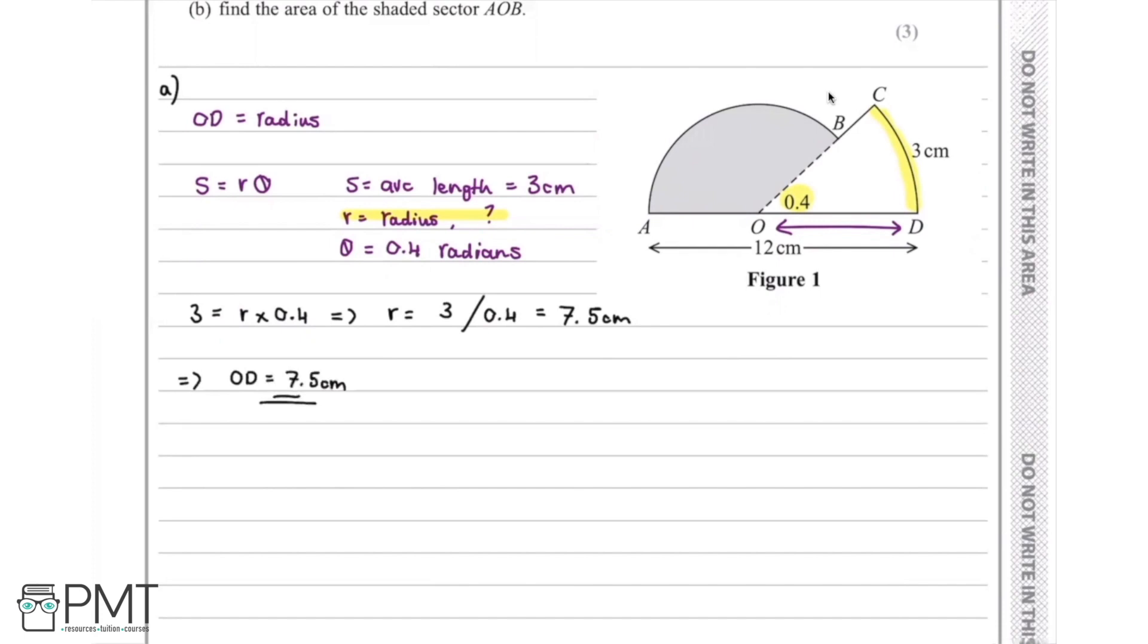In this question, where do we pick up our marks? The question is worth two marks. Our first mark we will pick up for using the equation s equals r theta, and then secondly we will receive our mark for concluding with the correct answer of OD equals 7.5 centimeters.